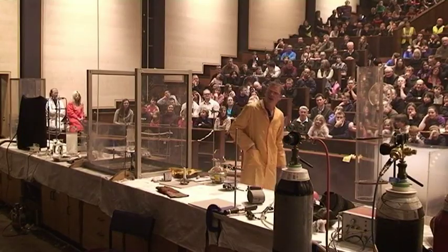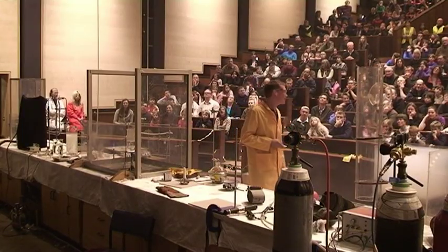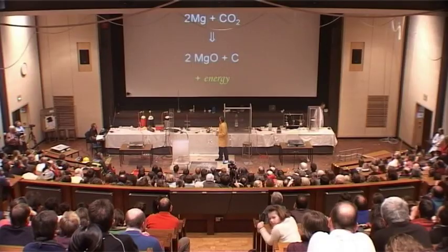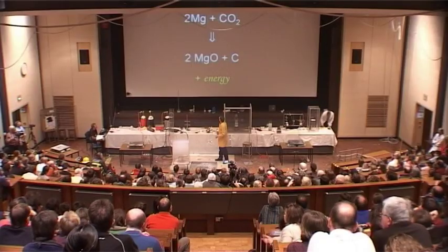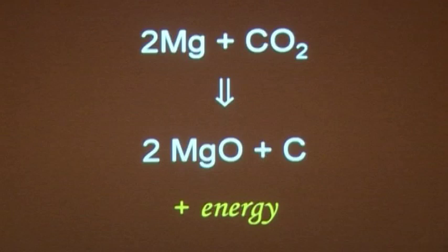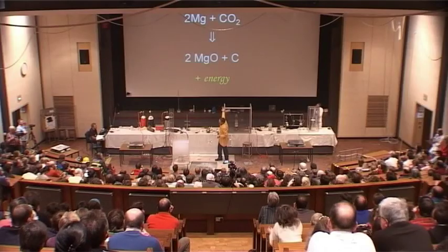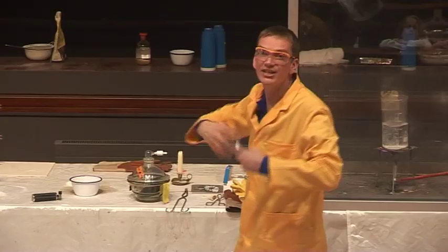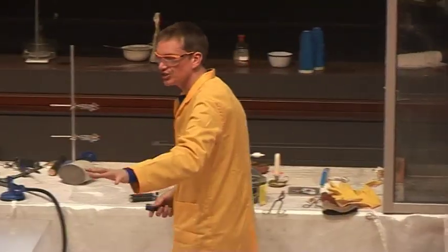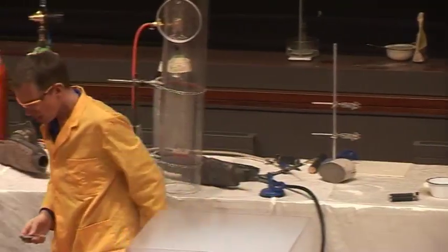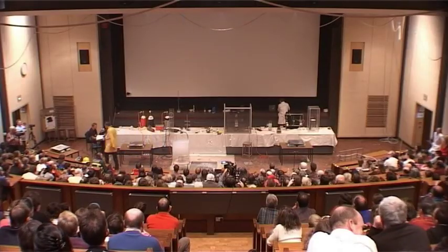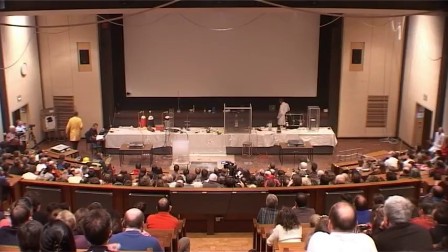We can show this with a chemical equation. Magnesium reacts with carbon dioxide — Mg and CO₂ — to form magnesium oxide. The magnesium steals the oxygen from the carbon dioxide, leaving behind the black carbon and also releasing energy. So the magnesium burns in the carbon dioxide, and we can't use carbon dioxide to put out burning magnesium.